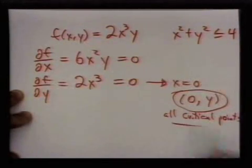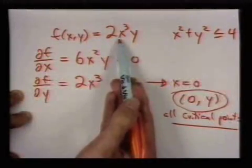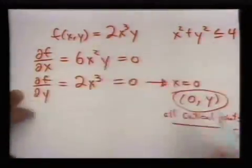But let me tell you why we can ignore all of these: because you look at the original function, you plug 0 in and then anything for y, the function equals 0.